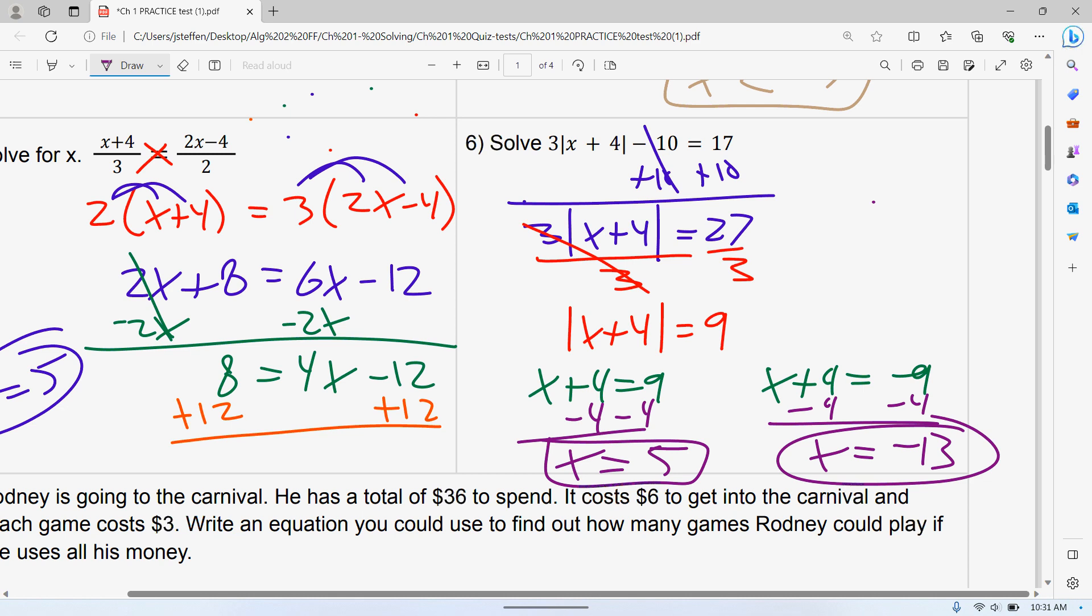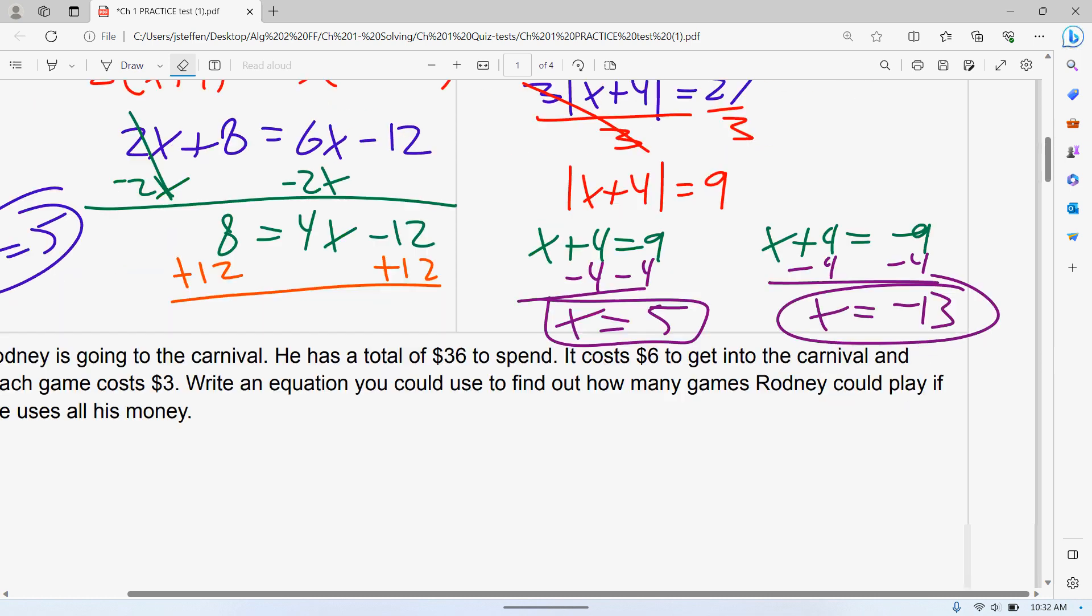If you distribute the three, it will work for this problem, but it doesn't always work. To get rid of that three, since it's multiplying, you're dividing by three. So we have X plus four is equal to 27 over three is nine. Now, since we've got it all by itself, we can split it up into our two equations. X plus four is equal to positive nine. X plus four is equal to negative nine. Subtract four from both sides over here. You get X is equal to five. Over here, X is equal to negative nine minus four, which should be negative 13.